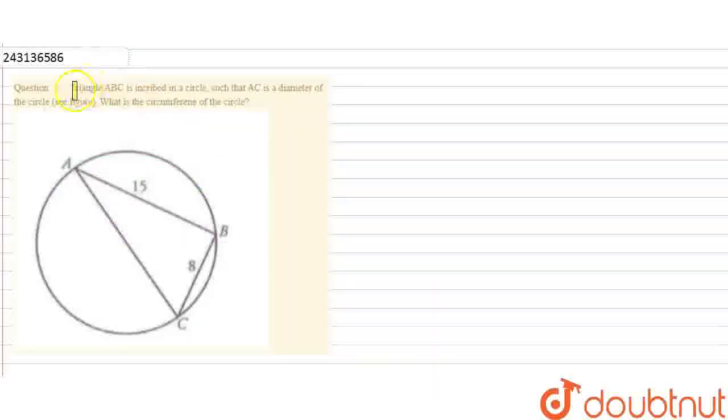Hello friends. In this question, triangle ABC is inscribed in a circle such that AC is the diameter of the circle. What is the circumference of the circle?